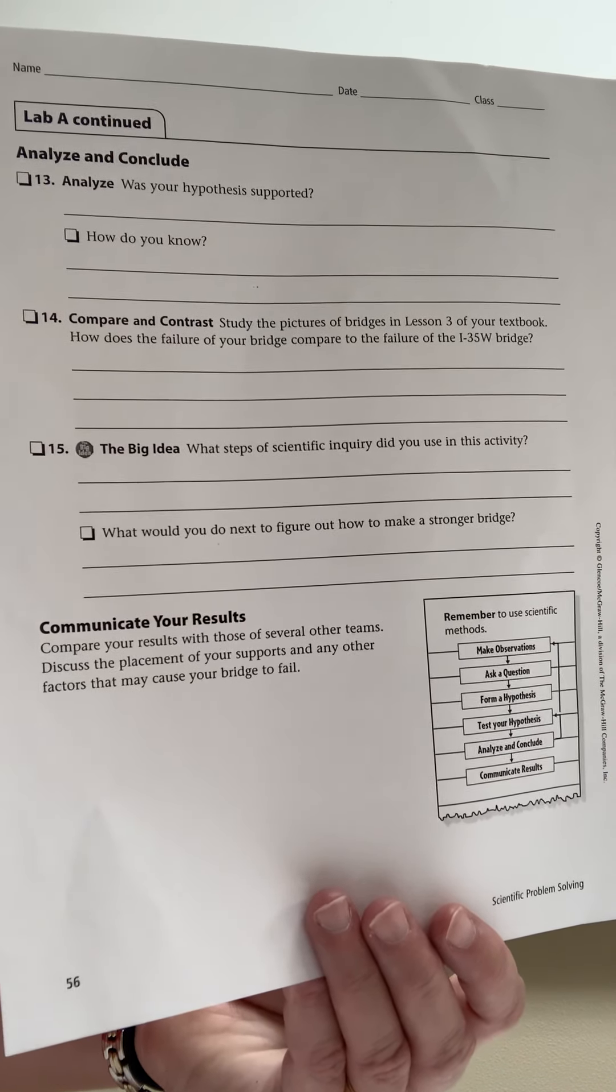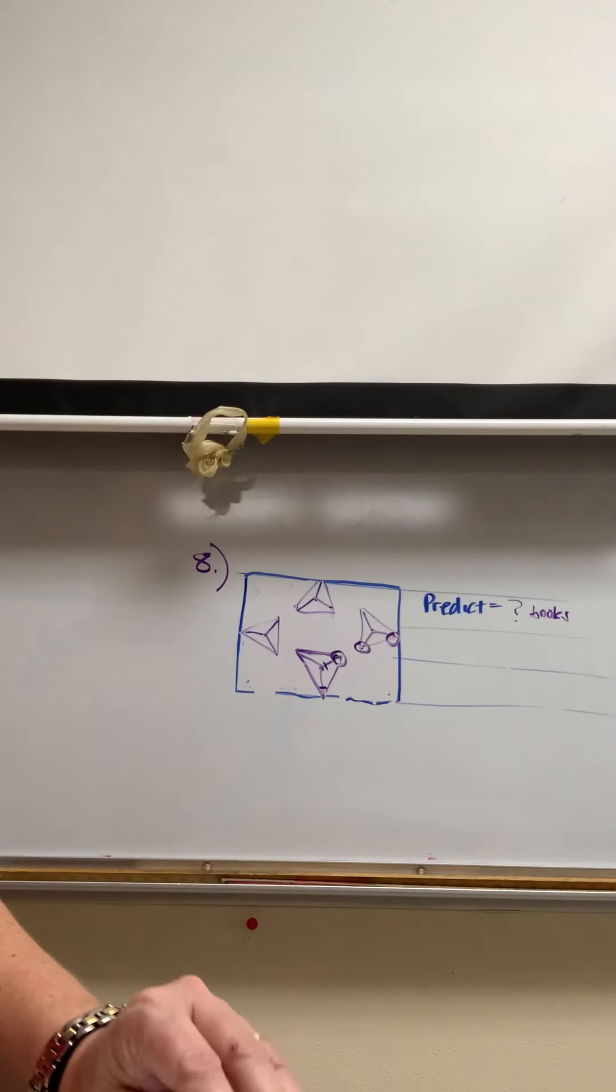Number sixteen then says compare and contrast. Study the pictures of the bridge in your textbook or your handouts I gave you on the I-35 bridge collapse. How does this represent or compare to the failure of that bridge? Your straws represent beams and your knots represent the nodes or the gusset plates and nodes.